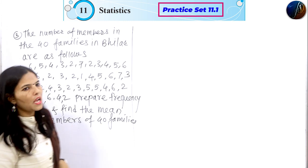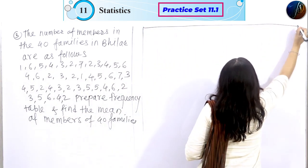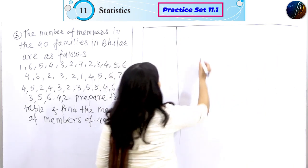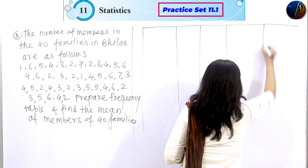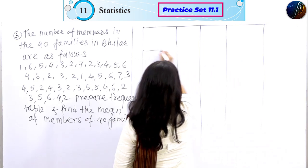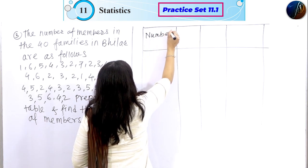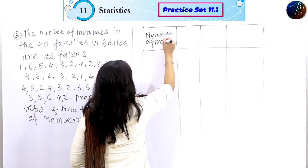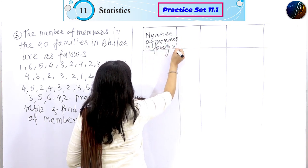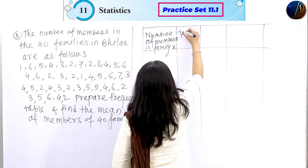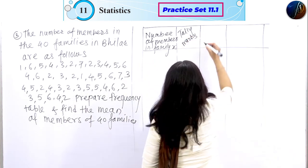First of all, the frequency table is prepared. What is the number of members? What do you do for the frequency table? You write tally marks, then frequency, and then the multiplication of fi × xi. The number of members in the family is xi, and the tally marks column comes next.